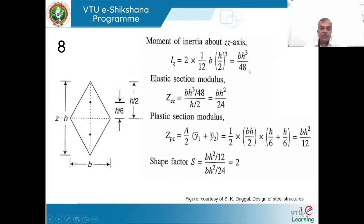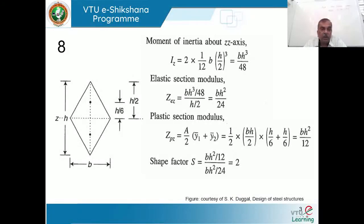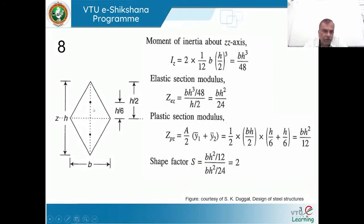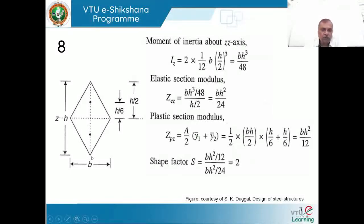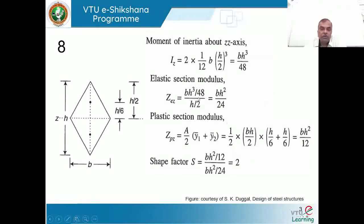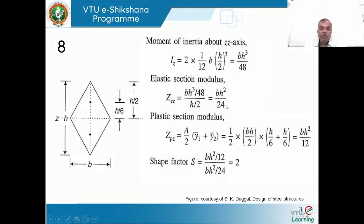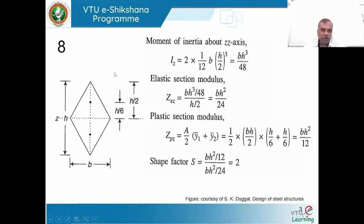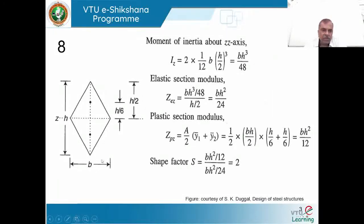The elastic section modulus Z_elastic equals I_Z divided by the distance of the extreme fiber. Due to symmetric behavior, that distance is H/2. So Z_elastic = (BH³/48) / (H/2) = BH²/24. Thus the elastic section modulus is BH²/24 for this rhombus section.